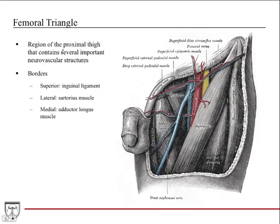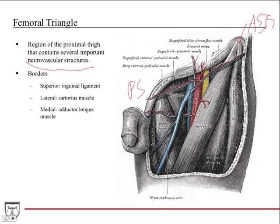The femoral triangle is a region of the proximal thigh that contains several important neurovascular structures, which are clinically relevant and could appear on an anatomy or board exam. The borders are: superiorly the inguinal ligament, laterally the sartorius muscle, and medially the adductor longus muscle — those are your three sides.